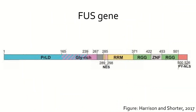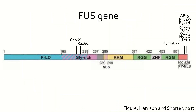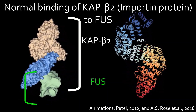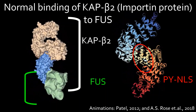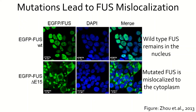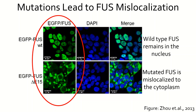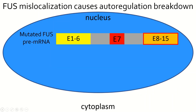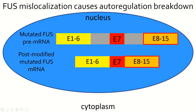Thus, FUS regulates itself through a negative feedback loop mechanism, ensuring that too much FUS is not produced. However, in patients with ALS, mutations cause mislocalization of FUS and thus a breakdown in this regulatory mechanism. Most mutations causing ALS have been found in the nuclear localization signal of FUS. This is a problem because mutated FUS is unable to be recognized by importin-β2, the protein responsible for nuclear import. This is shown in this figure, where FUS, shown in green, is no longer contained within the blue nuclei in patients with ALS, thus showing mislocalization.